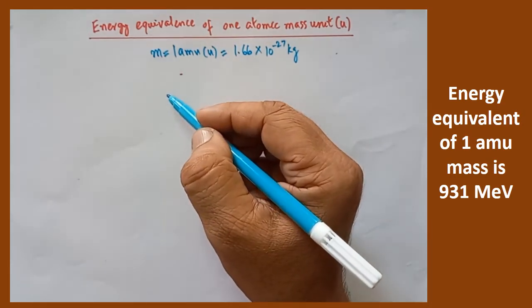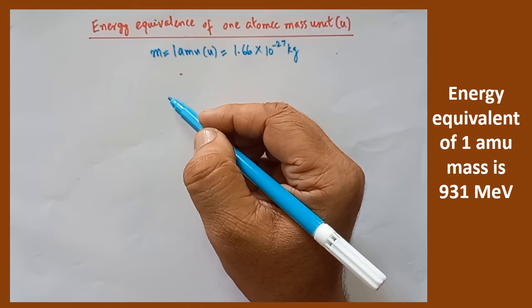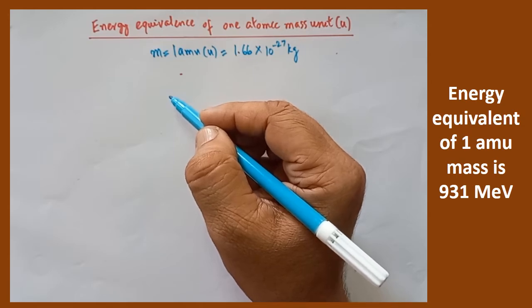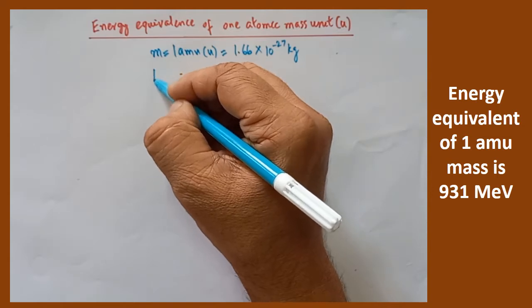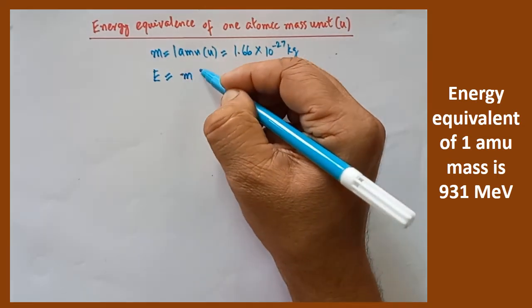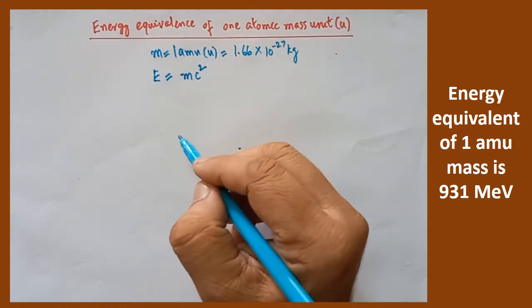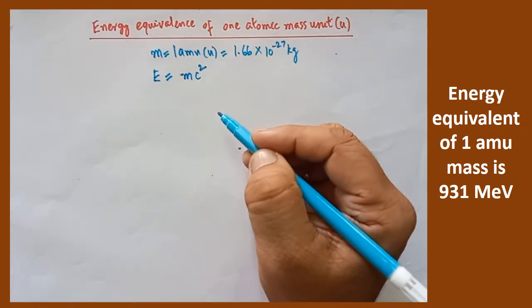With the help of Einstein's mass energy relation, we are able to convert the mass into energy form. So Einstein's mass energy relation tells that E is equal to mc square. This is from Einstein's mass energy relation.